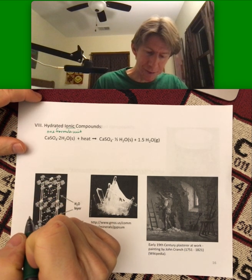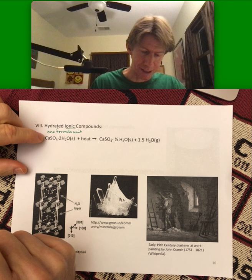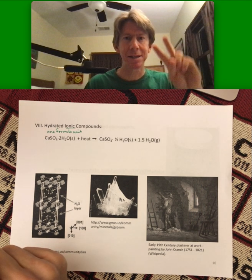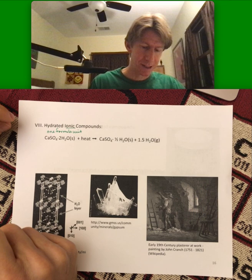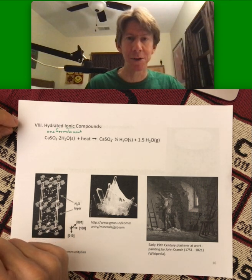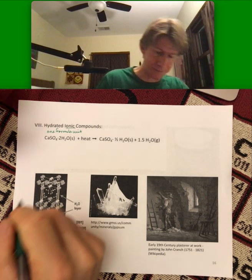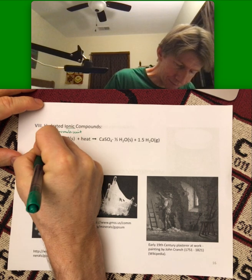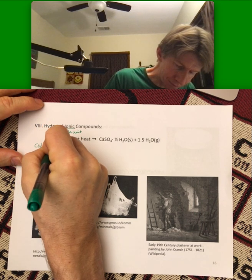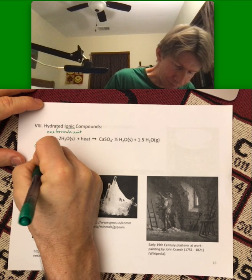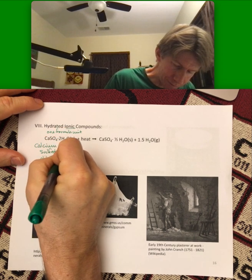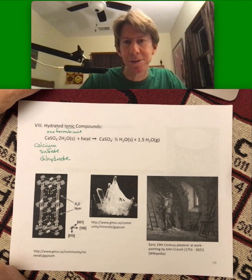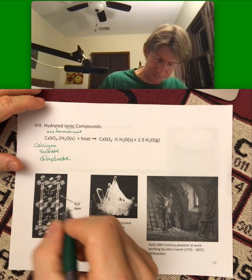The name of this is calcium sulfate dihydrate. They're going to use the same number prefixes that we just talked about. Calcium sulfate dihydrate, when it's taken out of the ground, is called gypsum.